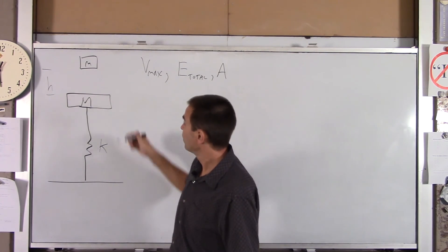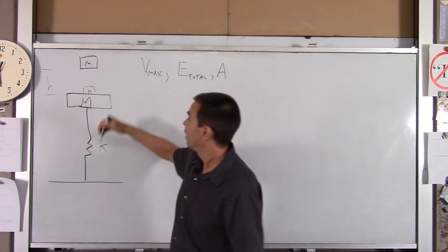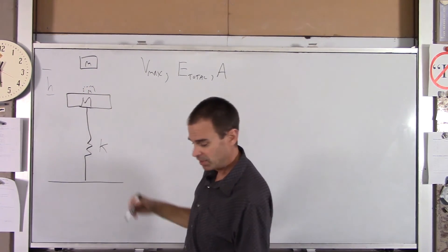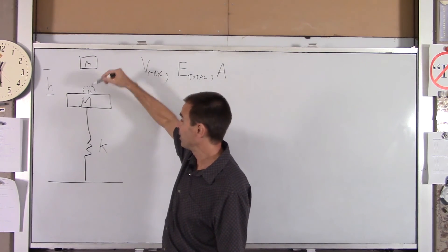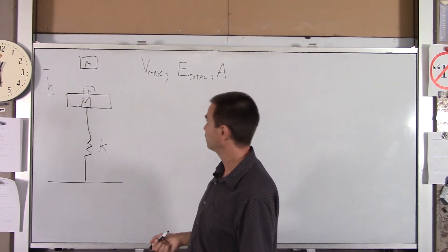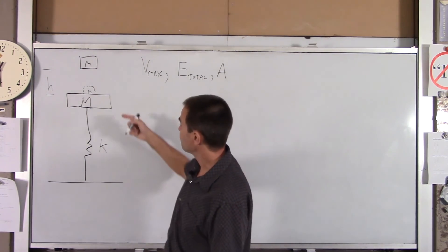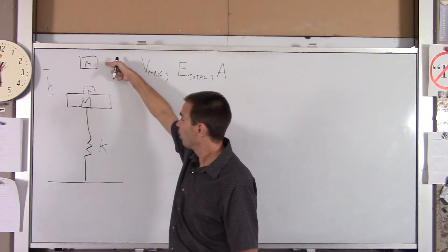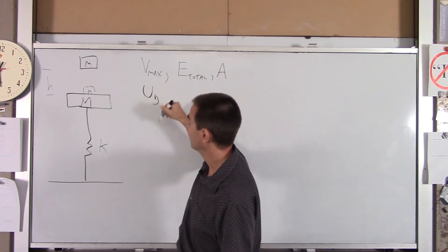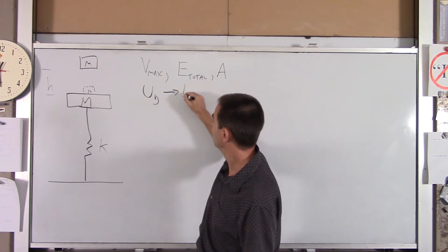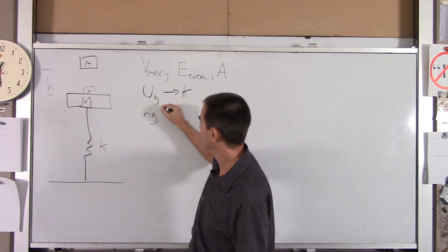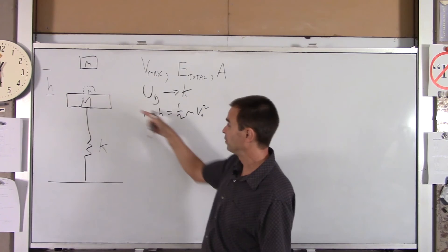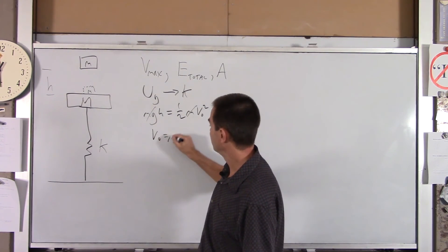In order to do this, we first need to find how fast the little guy is going when he strikes the mass. Then we'll find how fast they're going together immediately after impact. For the little mass going from point A to point B, we use conservation of energy. The initial velocity is zero, and right before the collision the velocity is V-naught. So mgh equals one-half m V-naught squared, giving us V-naught equals root 2gh.